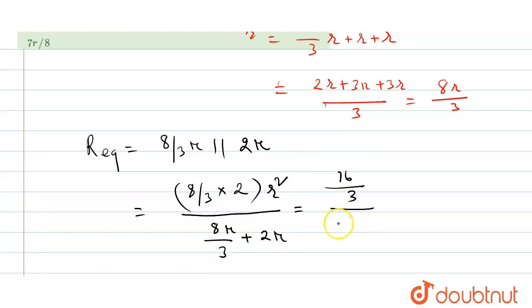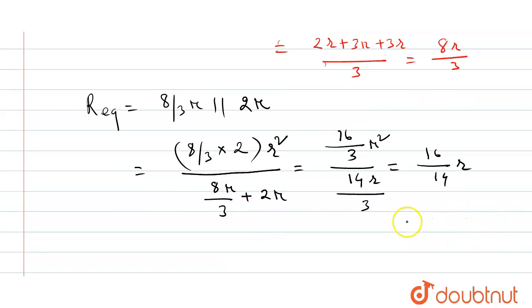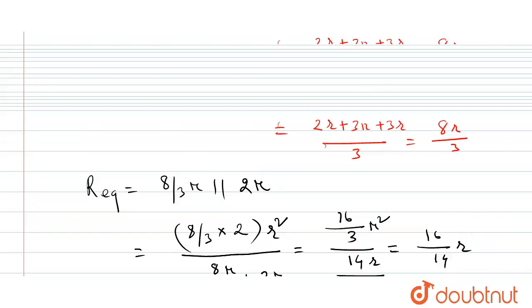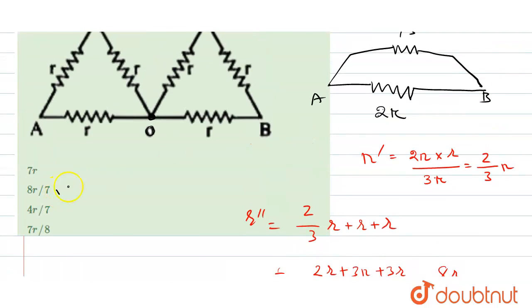Plus twice R, so this will be 16 by 3, divided by, this will be 8 plus 6, so it will be 14. This will be R square, this is R, divided by 3, so 3 will get cancelled, so it will be 16 by 14R, so 8 by 7R is the answer. Thank you.